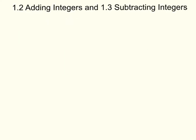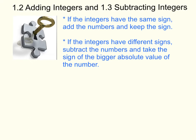The next two sections in Chapter 1 are 1.2 and 1.3: adding and subtracting integers. Here are your key concepts. If the integers have the same sign, add the numbers and keep the sign. If the integers have different signs, subtract the numbers and take the sign of the bigger absolute value of the number.